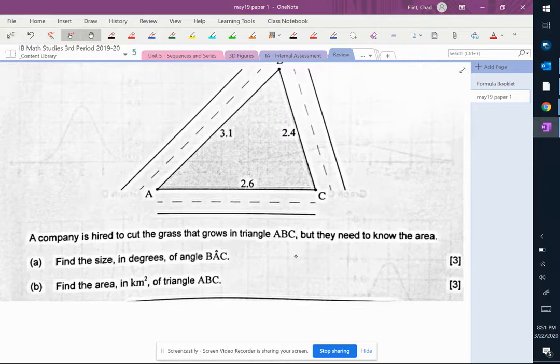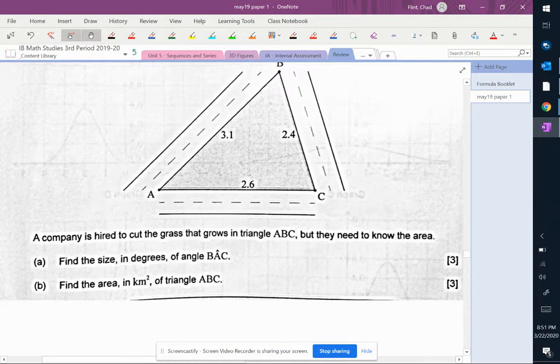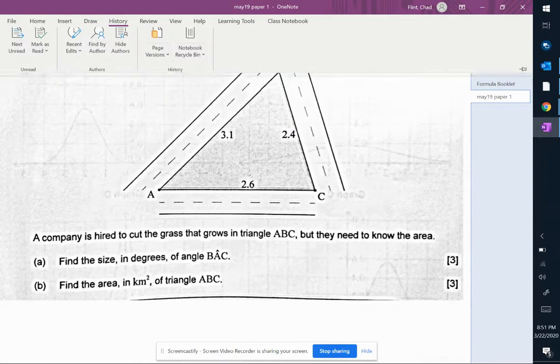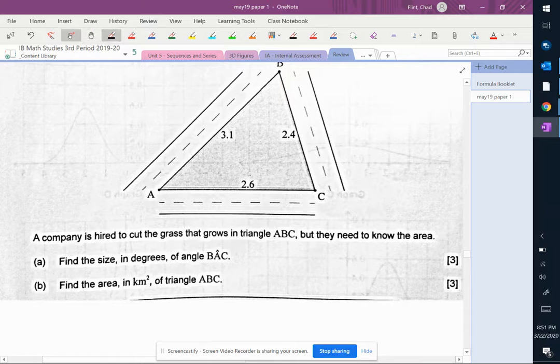So now remember that Ivy uses this little hat over the letter that's the vertex, instead of writing what you're used to seeing, which is something that looks like this. So this would normally be angle BAC, telling you the vertex is at A.